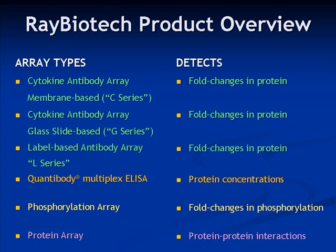RayBiotech has developed several types of arrays to meet the needs of scientists. The cytokine arrays are available printed on either nitrocellulose membrane, known as the C-Series arrays, or a glass chip, known as the G-Series arrays. Both the C-Series and the G-Series detect relative changes in protein levels. The label-based arrays, known as the L-Series, are a very high-density array platform capable of simultaneously detecting over 500 protein targets per array, with results presented as relative fold changes in cytokine levels.